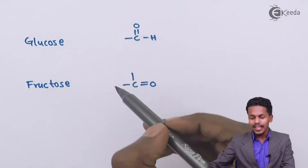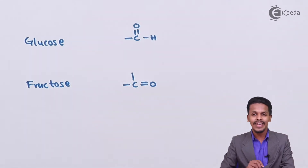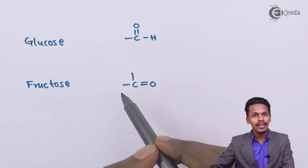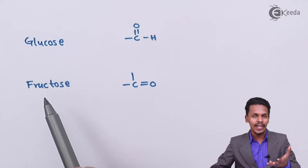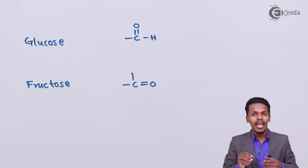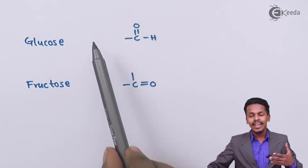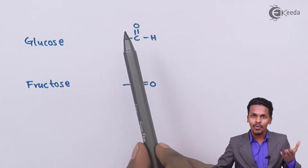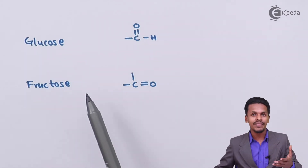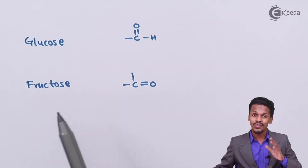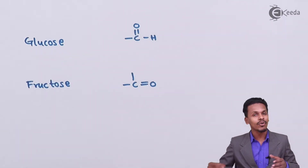Both glucose and fructose consist of a common functional group — the carbonyl group. Because of the carbonyl group associated with the other carbon atoms present in glucose and fructose, they have the ability to reduce Fehling's solution and Tollens' reagent. It has been found that not only glucose but fructose also gives a positive test, which indicates it depends upon the carbonyl group associated with both.